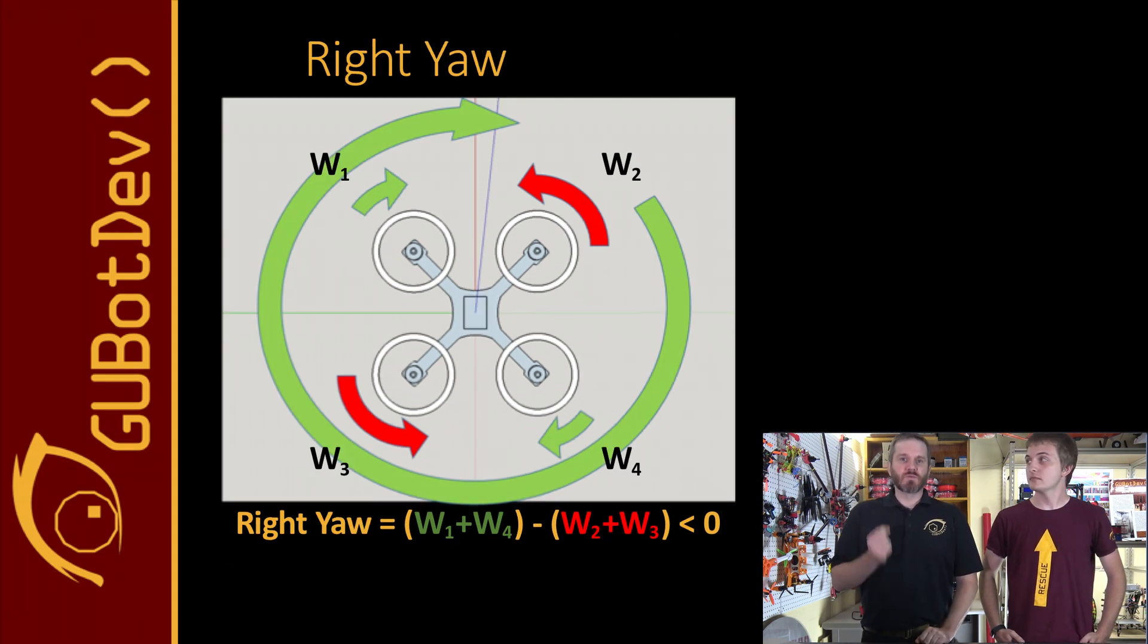But if the rotational force in one direction overpowers the opposing rotational force, it will cause the drone to yaw in the direction of the weaker force or opposite of the stronger force. Here you see that two counterclockwise motors are producing more torque than the clockwise motors. Therefore, the counterclockwise motors produce an opposite clockwise torque and cause the drone to yaw in a clockwise rotation.